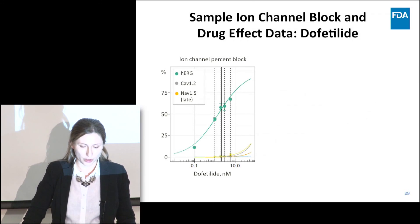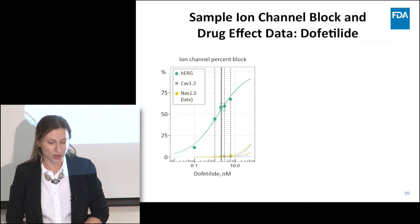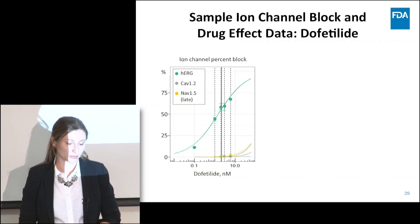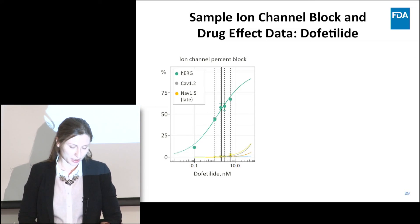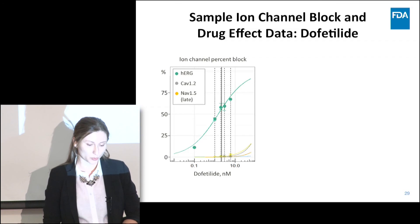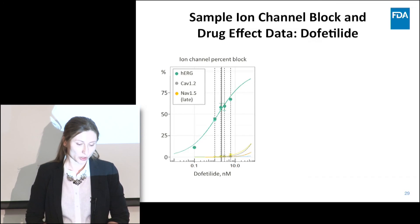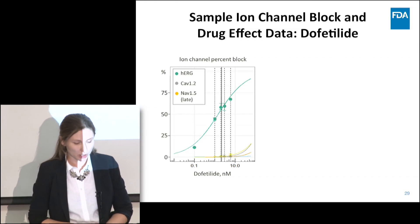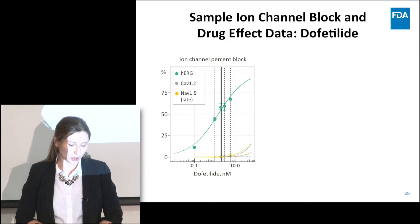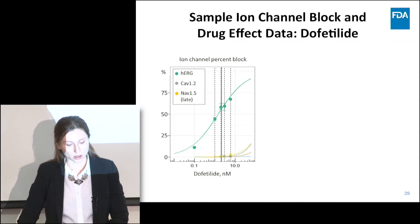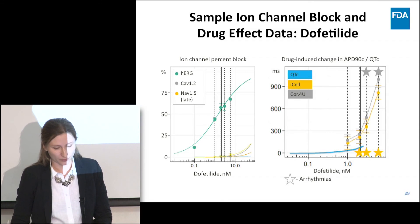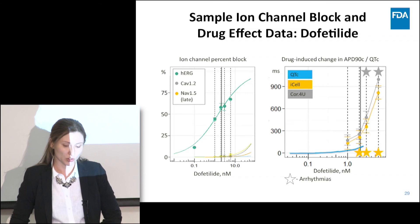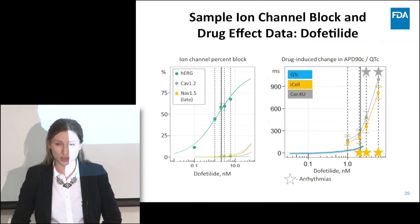Here is a sample of the data we obtained for all 26 drugs — I'm using dofetilide here. On the left is manual patch clamp data: on the x-axis is dofetilide concentration, on the y-axis is percent ion channel block. The solid vertical line corresponds to the clinical C-max for this drug and the dotted lines are concentrations used in stem cell studies. You can see that dofetilide is a pure HERG blocker. On the right I show the effect of dofetilide on drug-induced action potential duration and clinical QTC.